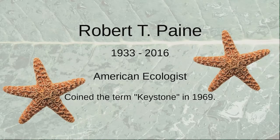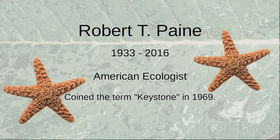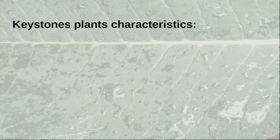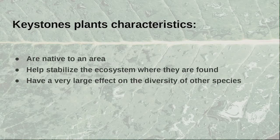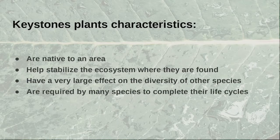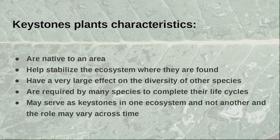Robert Payne was a professor at the University of Washington. He removed one particular species of starfish from waters in an area and observed what happened. He found that when you remove one species from an ecosystem it has dramatic shifts, and in the late 1960s he coined the term 'keystone' to describe these species. So what is a keystone species? They're native to an area, they help stabilize the ecosystem where they're found, have a very large effect on the diversity of other species, are required by many species to complete their life cycles, and may serve as keystones in one ecosystem and not in another.